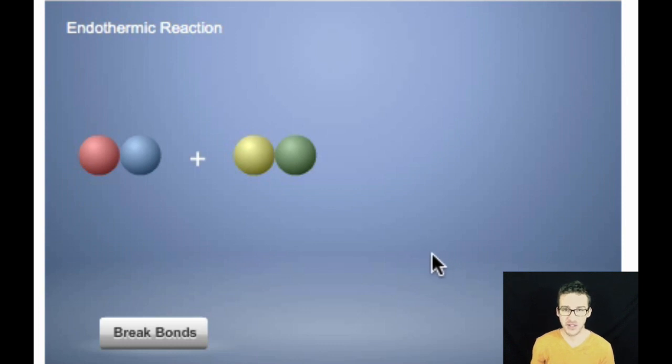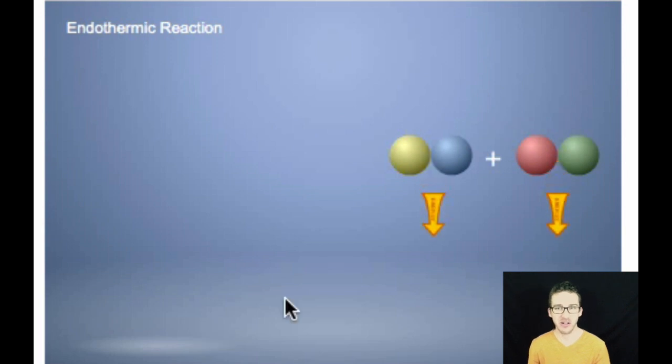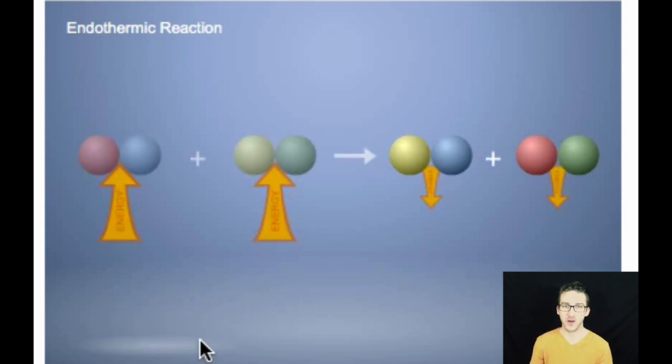So let's take a look at a thriller of an animation that represents an endothermic reaction. Again, we have to put energy in to break bonds, and then when we make new bonds, energy is released. Now, for an endothermic reaction, we put more energy in to break the bonds than is released when those new bonds form. So, our delta H will be positive.